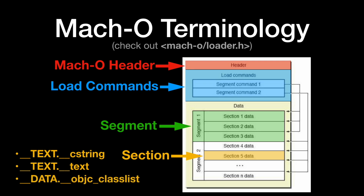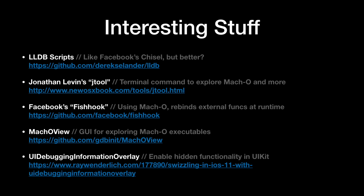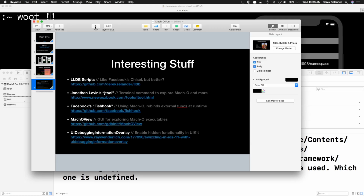Another example in the data segment with readable and writable permissions is the ObjC class list section. This stores pointers to each of your classes in that module. What I'll sometimes do is take the size of this section divided by the size of a pointer, and I can very quickly figure out all the classes in a framework or executable.